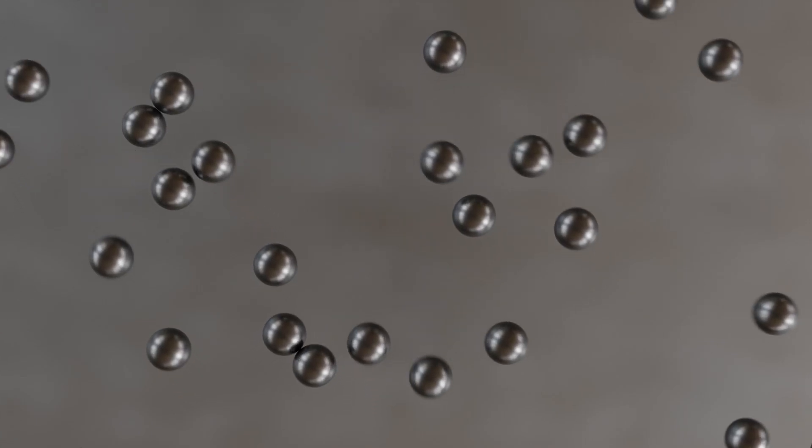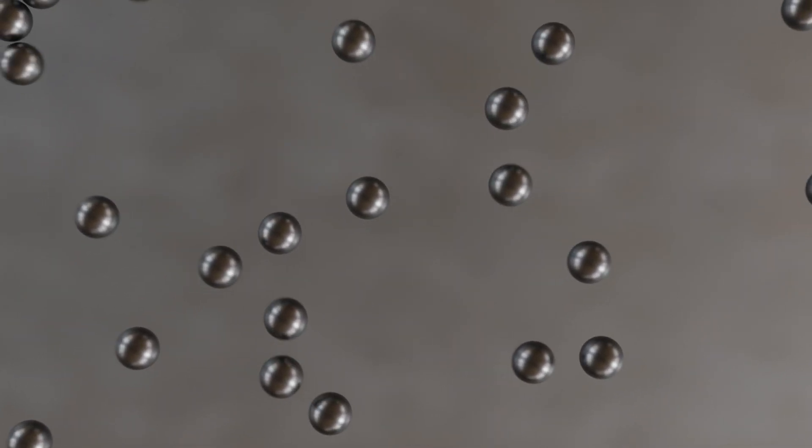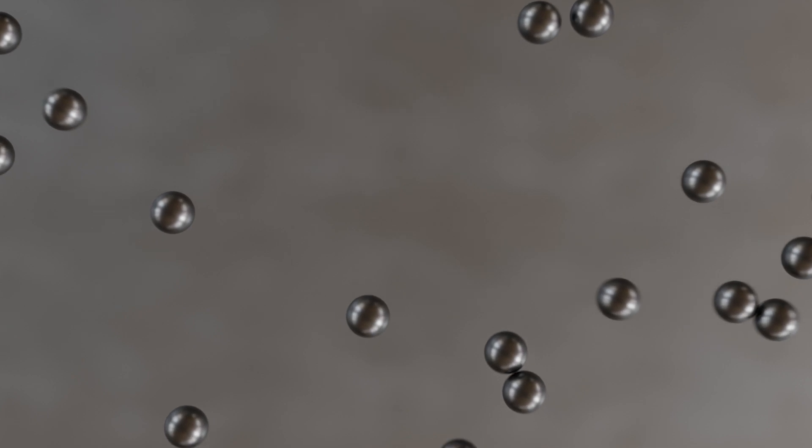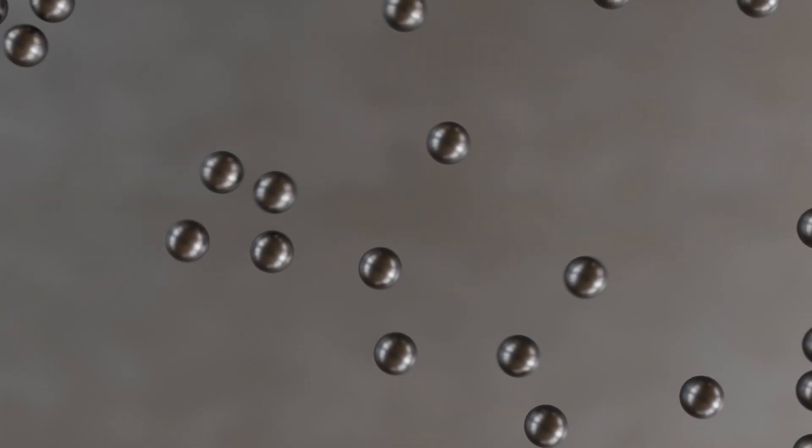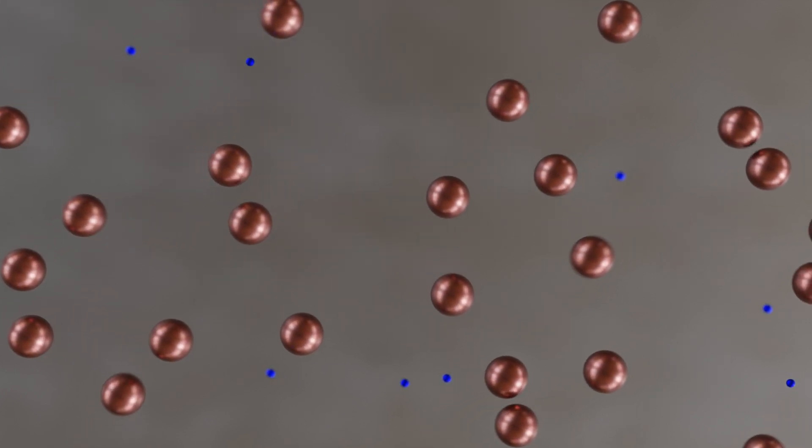The atomic cohesion of a metal comes about through a special bond, which is therefore also called metal bonding. In such a bond, the metal atoms release all their outer electrons. In this way, the energetically favorable noble gas configuration is achieved.